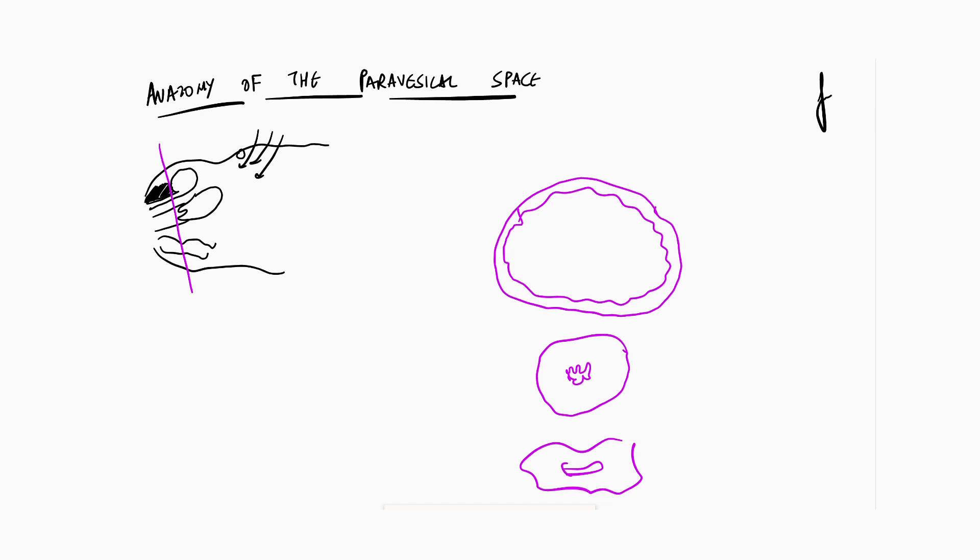As a student, you should also understand that in front you have the pubic symphysis. The pubic symphysis then continues inside the pelvis as a bony prominence, and this bony prominence is a very important part of the paravesical space.